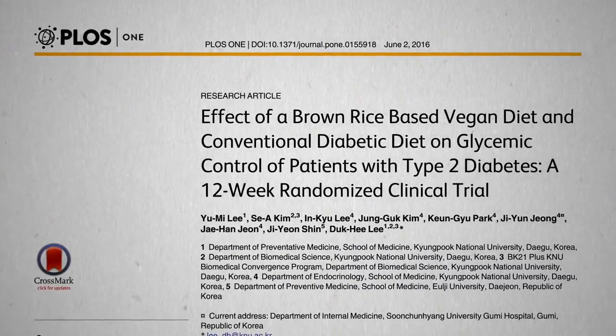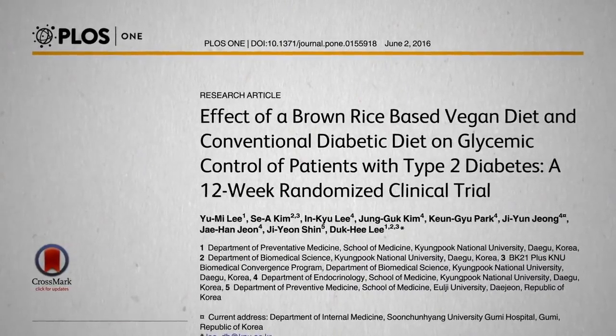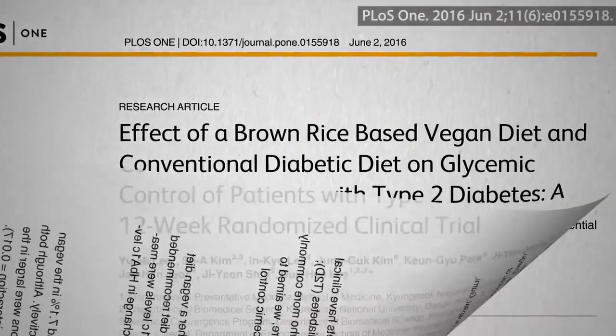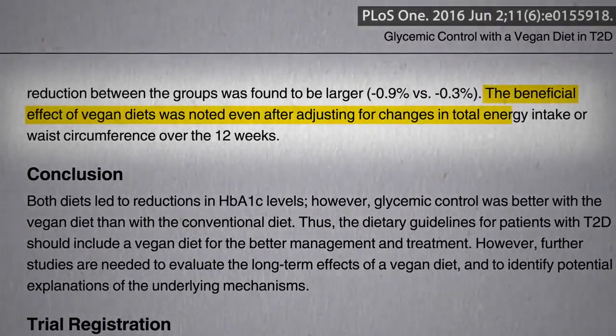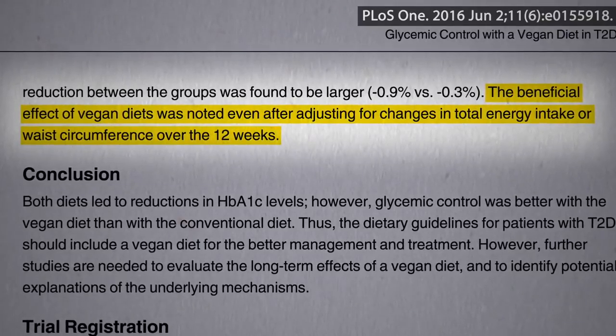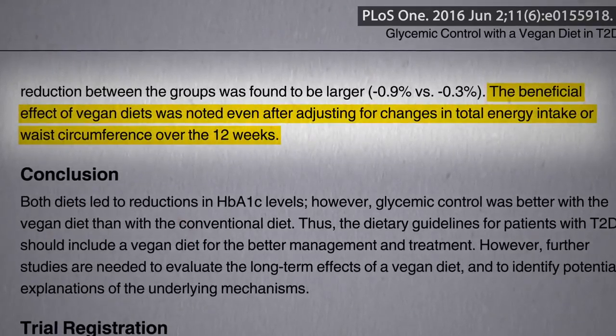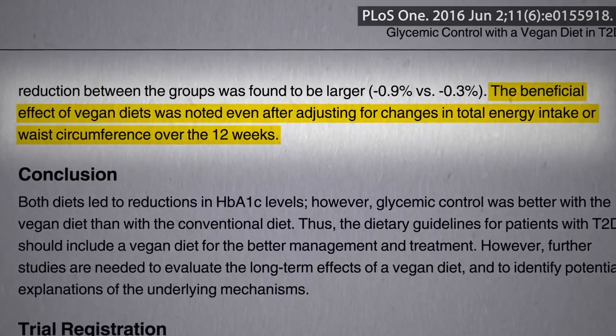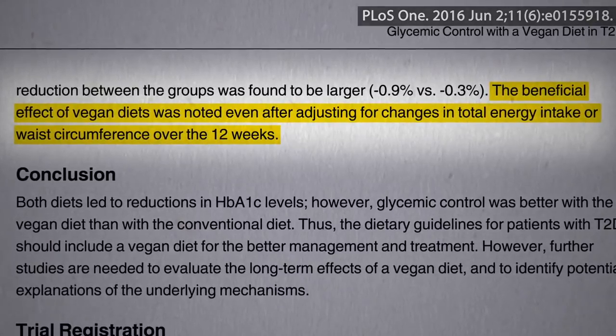Well, there was this study that showed that a brown rice-based vegan diet beat out the conventional diabetes association diet, even after adjusting for the extra belly fat they lost. But that may have been due to the plant-based nature of their diet, rather than just how brown rice-based it was.